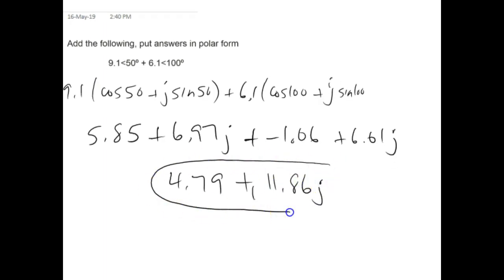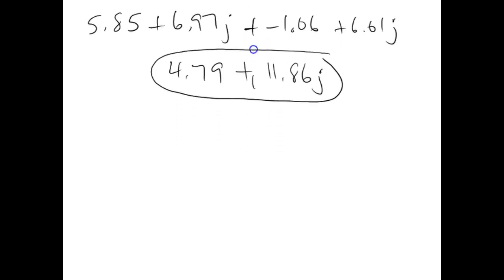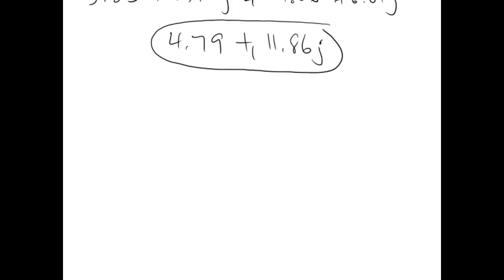So this right here that I'm circling is my rectangular form for these two things here in polar. Now in order to put this back into polar form, I have to again draw this out.